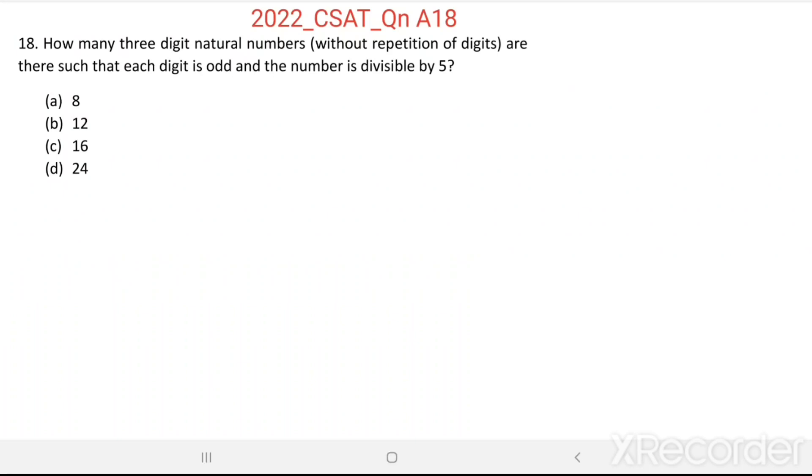Question number 18. How many three-digit natural numbers without repetition of digits are there, such that each digit is odd and the number is divisible by 5?